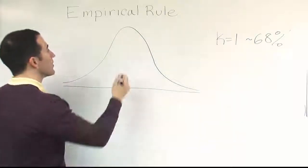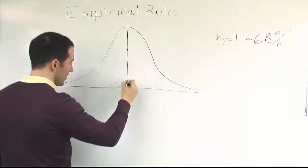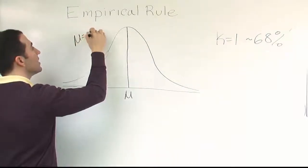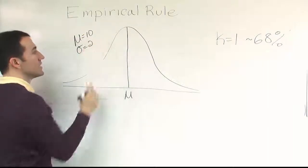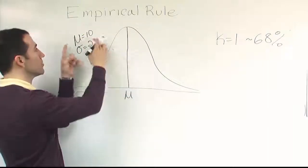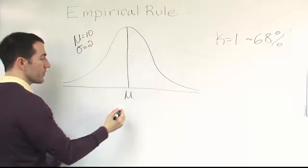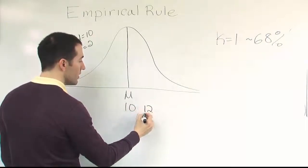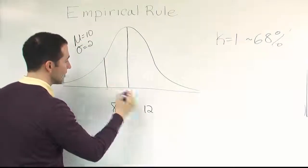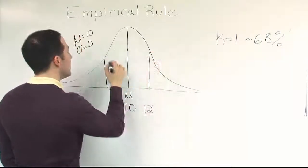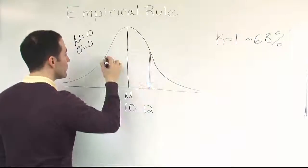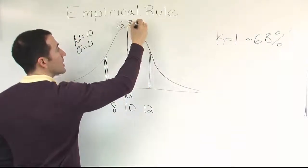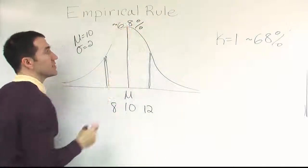The way that's represented on the curve would be like this. If our mean was here, and let's say the mean is 10 and the standard deviation is 2 for this data set, the center here would be 10. If you go out to 12 and down to 8, you've covered one standard deviation. In that span, we'd have approximately 68% of the data.